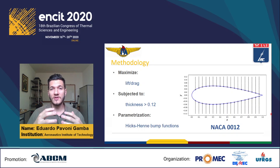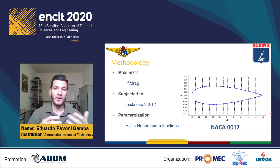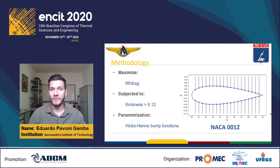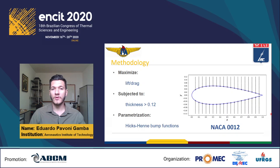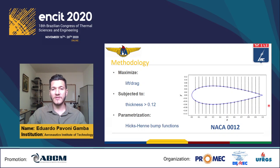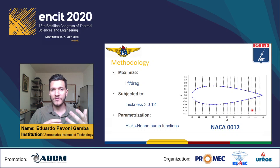Our case is the maximization of the lift-drag ratio, or aerodynamic efficiency, which is the most important parameter in a wind turbine airfoil project. It is subject to a geometric constraint of thickness higher than 0.12 for structural reasons. We are using Hicks-Henne bump functions as the parameterization method. The picture shows our baseline airfoil, NACA 0012, and the design variables distributed over the airfoil surface. We apply this optimization for different angles of attack to investigate the outcomes of these variations.